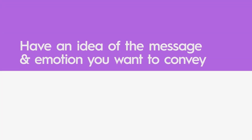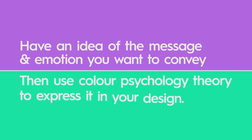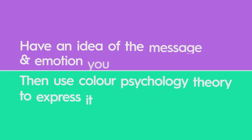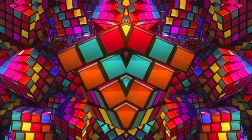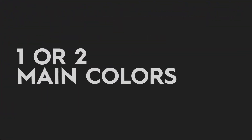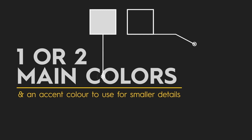Color is something many designers get wrong. Some quick tips: first, have an idea of the message or emotion you want to convey, then use colors from color psychology theory to express that. Also, try sticking to a smaller color palette — don't use too many colors that clash. Think of just one or two main colors and then an accent color for smaller details that make things stand out. For example, charcoal black and light gray as the two main colors, with an orangey yellow as an accent color.